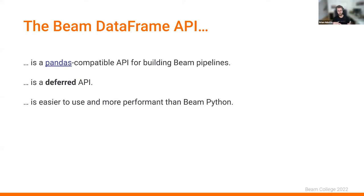Our goal with the DataFrame API is to make it so that rather than building your Beam pipeline with the traditional SDKs — the Java SDK or the Python SDK — you can build your pipeline using this pandas API, which is sort of higher level and more declarative. We're responsible for turning that into a Beam pipeline for you. Our goal is for the Beam DataFrame API to be totally compatible with pandas, though there are some caveats I'll get into.